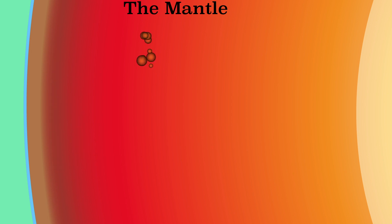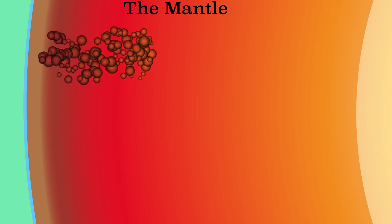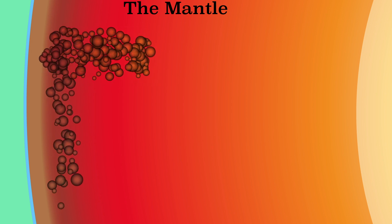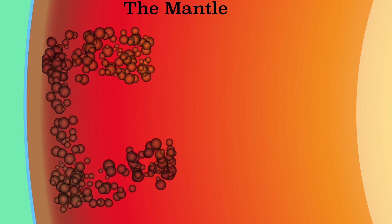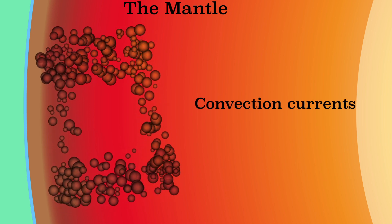The rock is heated up, so it expands and becomes lighter and starts to rise. Just below the crust, it can cool down, shrink, which makes it heavier and sinks again. These are called convection currents and they can move a few centimeters a year.